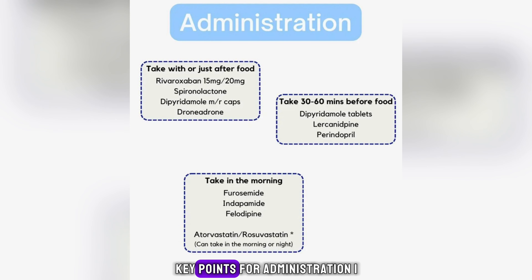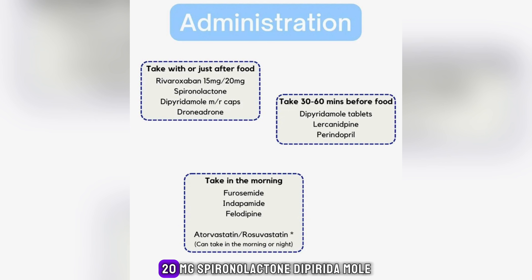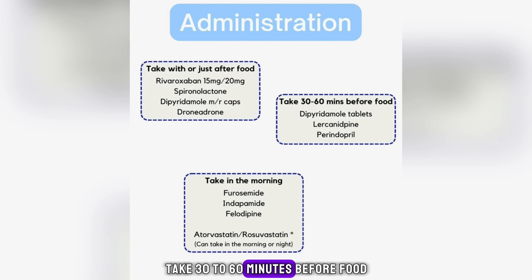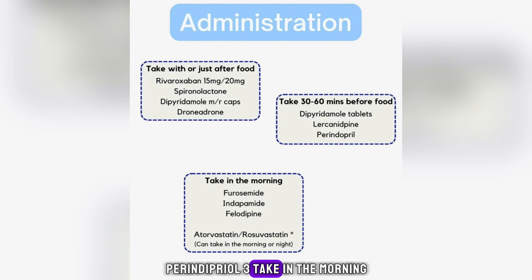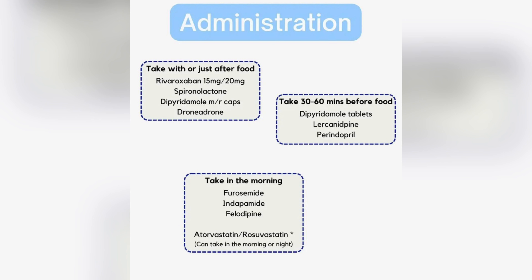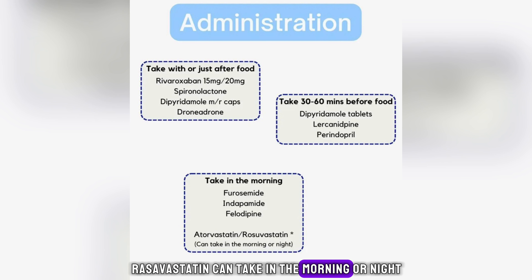Key points for administration. 1. Take with or just after food: rivaroxaban 15 mg, 20 mg; spironolactone; dipyridamole MR caps; ranolazine. 2. Take 30–60 minutes before food: dipyridamole tablets; lercanidipine; perindopril. 3. Take in the morning: furosemide; indapamide; felodipine. Atorvastatin and rosuvastatin can be taken in the morning or at night.